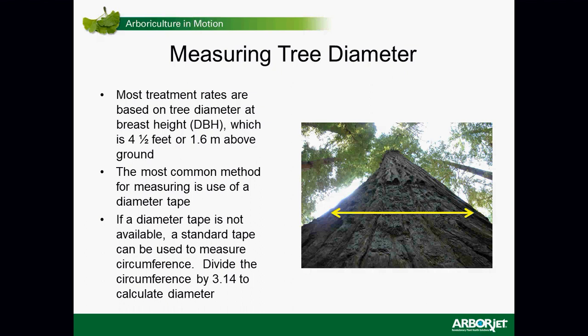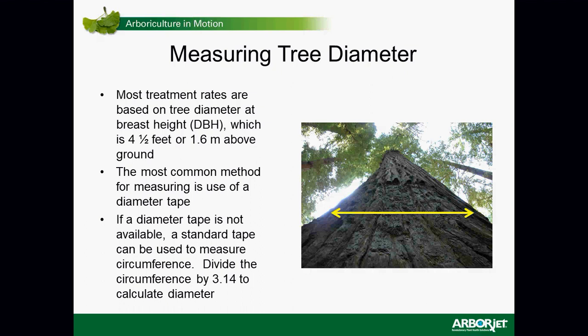Measuring the tree: most labels are based on tree diameter at breast height, which is four and a half feet (1.6 meters) above the ground. If you use a diameter tape, it measures circumference and automatically divides by 3.14 (pi) to give you diameter. If using a standard tape, you have to do that division yourself. Follow the pesticide label and injection device instructions for dosing — sometimes it's the number of capsules, sometimes loading your microinfusion device with product.